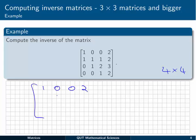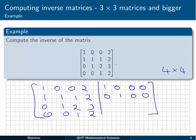So 1, 0, 0, 2, 1, 1, 1, 2, 0, 1, 2, 3, 0, 0, 1, 2. Then we want to augment it with a 4×4 identity matrix. Remember that's a matrix of zeros except for ones on the diagonal. So there we have it. And I'm going to write that as A augmented with the identity matrix.